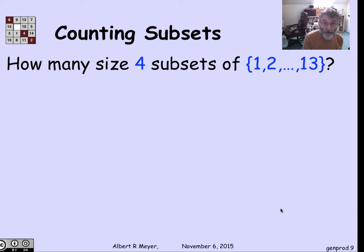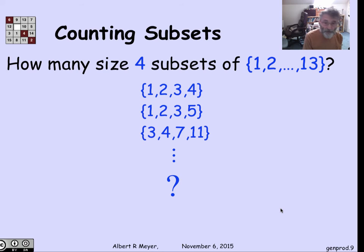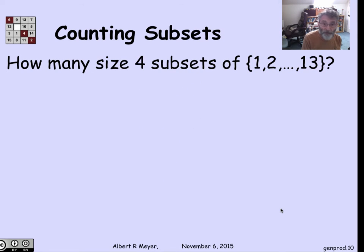Let's apply it to this very important example. Suppose I want to count the number of size 4 subsets, not sequences, of the set of 13 numbers, 1 through 13. For example, 1,2,3,4 or 1,2,3,5 or 3,4,7,11, and so on. How many of these subsets of size 4 are there? There's a nice trick for using the bijection rule.